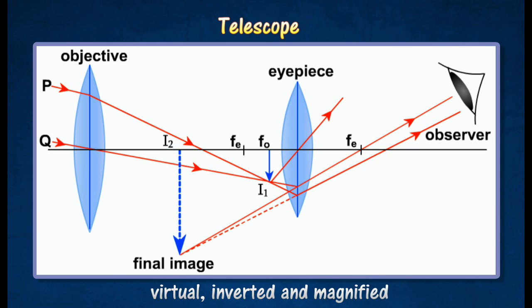In normal adjustment, the final image is formed at infinity to produce the highest magnification.